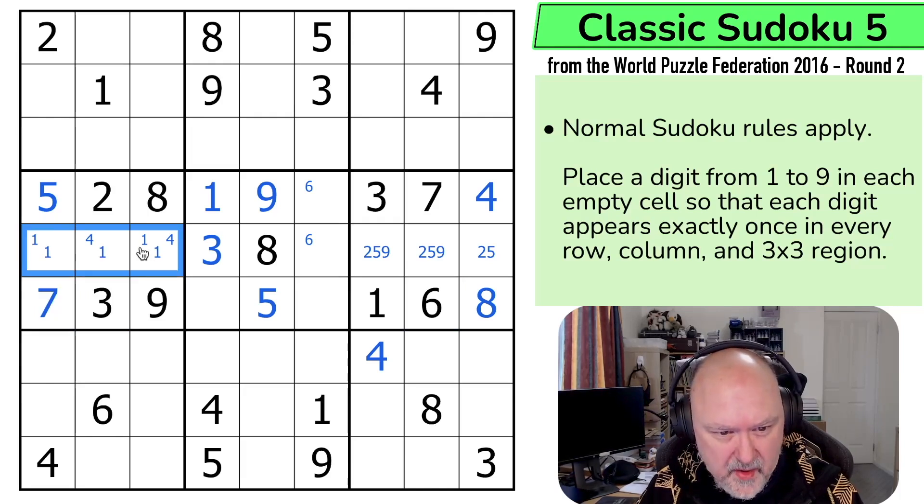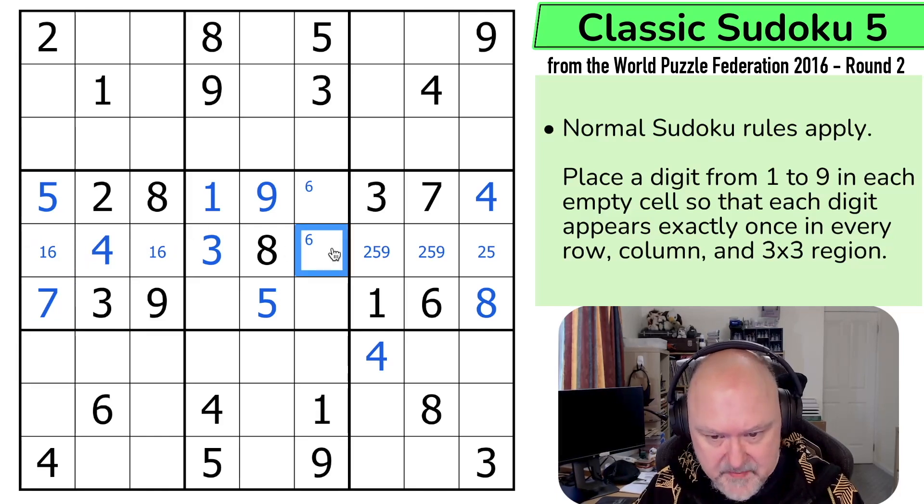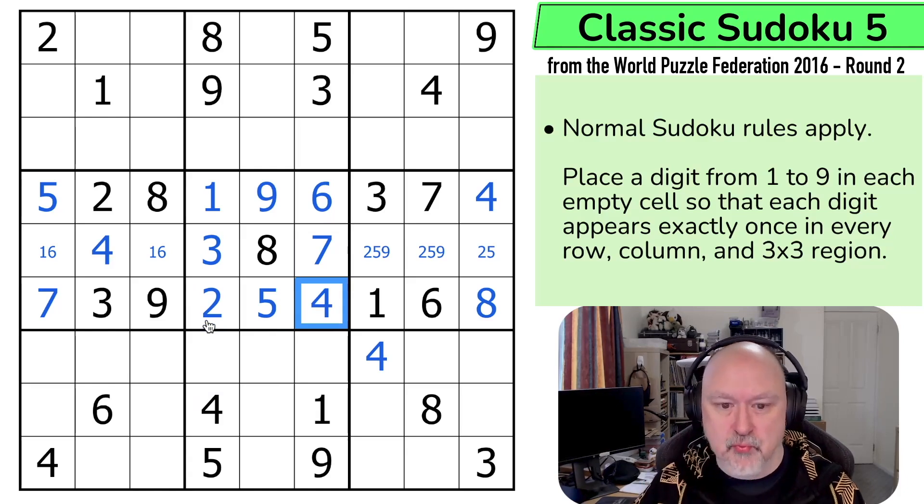Therefore, these are 1, 4, 6. Well, there's no 4 there, no 1 there, no 6 there. That's the 4. This is a 1, 6 pair. I can remove the corner marks, but it means that's not the 6. That's the 6. This has to be the 7. And these are 2 and 4, and the 4 is looking at making that the 2, that the 4. That's a really nice opening.